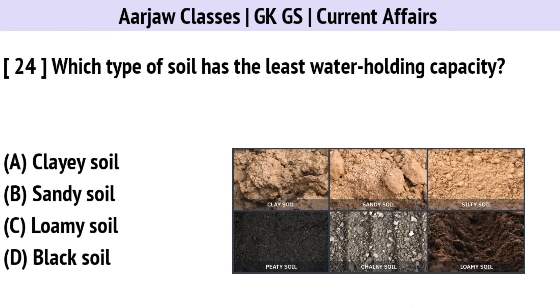Which type of soil has the least water-holding capacity? The correct option is B — Sandy soil.